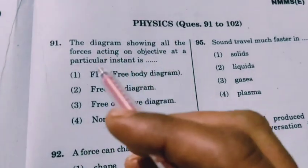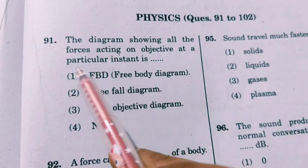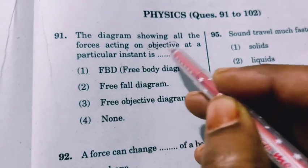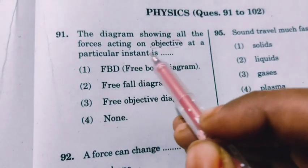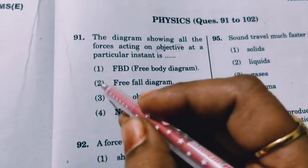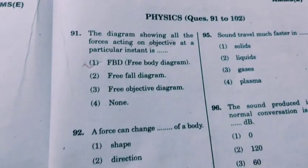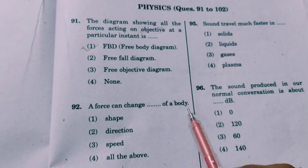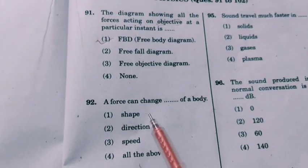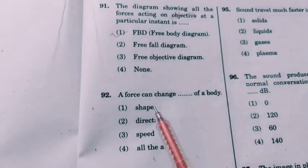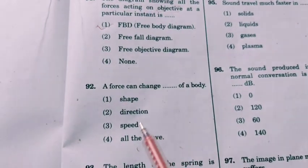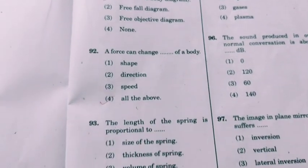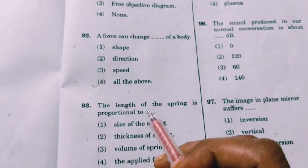The diagram showing all the forces acting on an object at a particular instant is a free body diagram. A force can change the shape, direction, and speed of a body. So when we apply force on any object, it will change its shape, direction, and speed — so the answer is 'all of the above.'